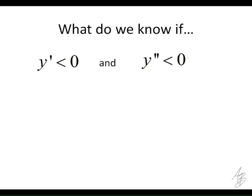Finally, if the first derivative is negative we know it's decreasing and the second derivative is negative we know it's concave down, so we'll be looking at this part right here where it's concave down and decreasing — it looks something like that.